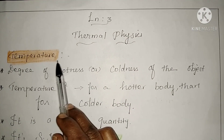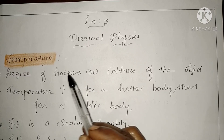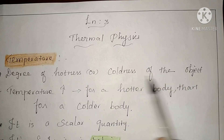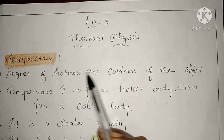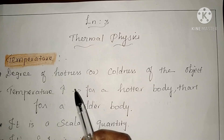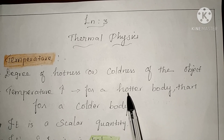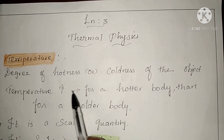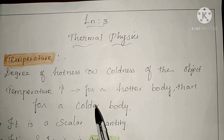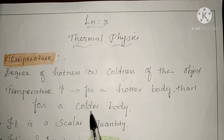First we are going to learn the concept of temperature. Temperature is the degree of hotness or coldness of an object. We can check whether a body is hot or cool by using a temperature scale. Temperature is higher for a hotter object — if you touch a hot object, you can feel the hotness because the temperature of the hot body is raised compared to the colder body. We can feel that the temperature is low for the colder body.